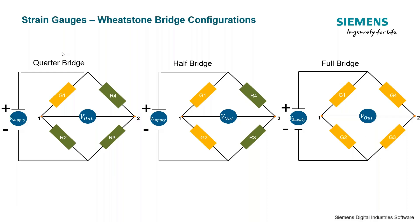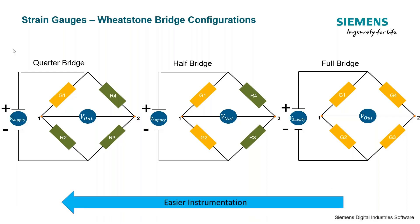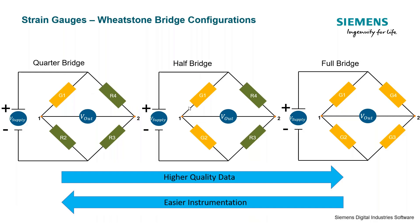Each bridge type has benefits and drawbacks. The quarter bridge requires the least instrumentation effort — just one gauge, with the rest of the bridge completed inside the data acquisition system — but provides less output and can't compensate for electromagnetic noise or temperature effects. The half bridge offers more output and some compensation for measurement effects. The full bridge is the most difficult to instrument since four gauges must be applied, but it provides the most output and can compensate for different loading and temperature effects.